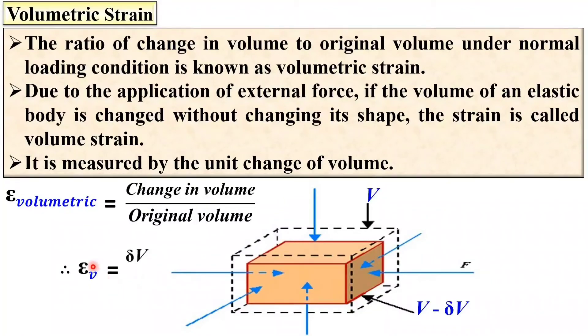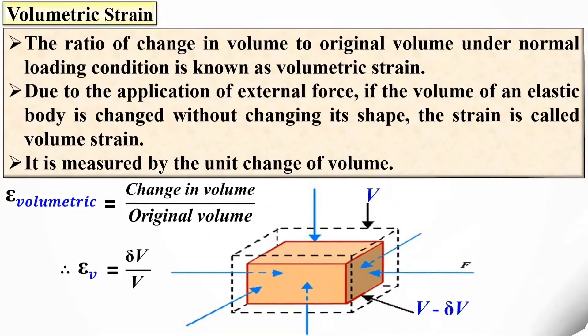Mathematically, epsilon V equals delta V upon V, where delta V is the change in volume, V is the original volume, and epsilon V is the volumetric strain.